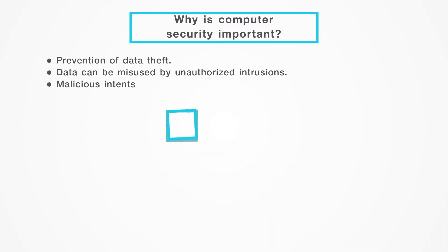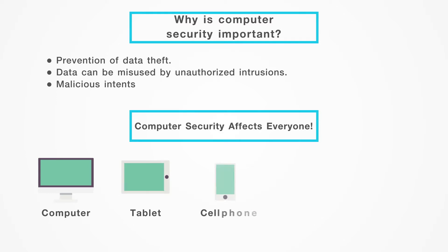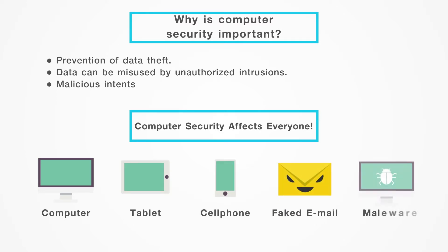Computer security affects everyone. Cyber security doesn't involve just businesses and the government. Your computer, tablet, and cell phone probably contain information that hackers and other criminals would love to have, like other people's email addresses, names, and birth dates. For example, if a hacker had access to your contact information, he could then send an email to everyone you know using your name, encouraging them to click on a link containing malware he created.